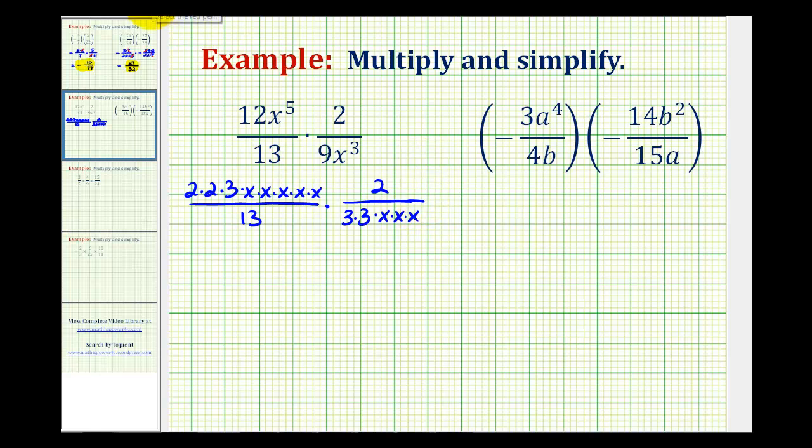Now we'll identify the common factors between any numerator and any denominator. So here we have a common factor of three, which would simplify to one. Notice we also have three factors of x in common, which would simplify to one. So x over x simplifies to one, x over x simplifies to one, and x over x simplifies to one.